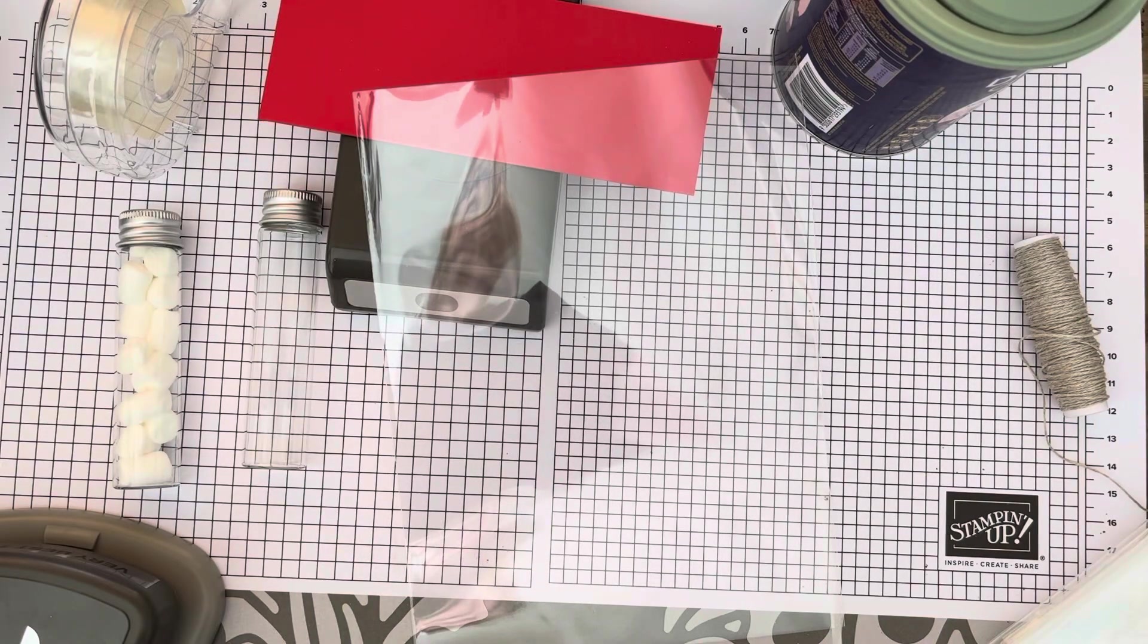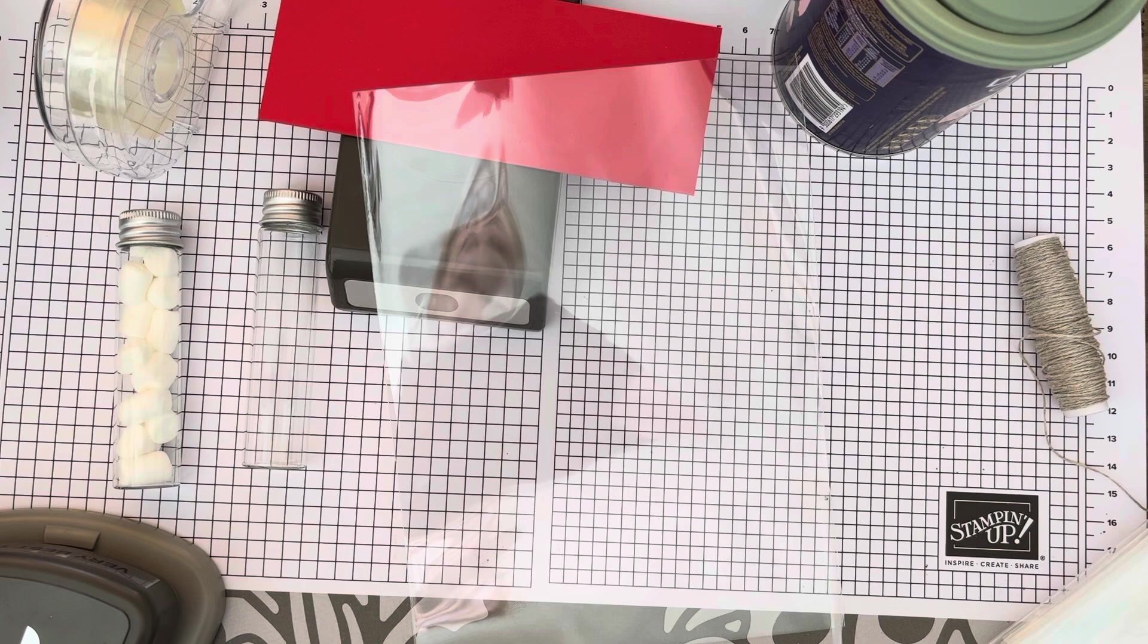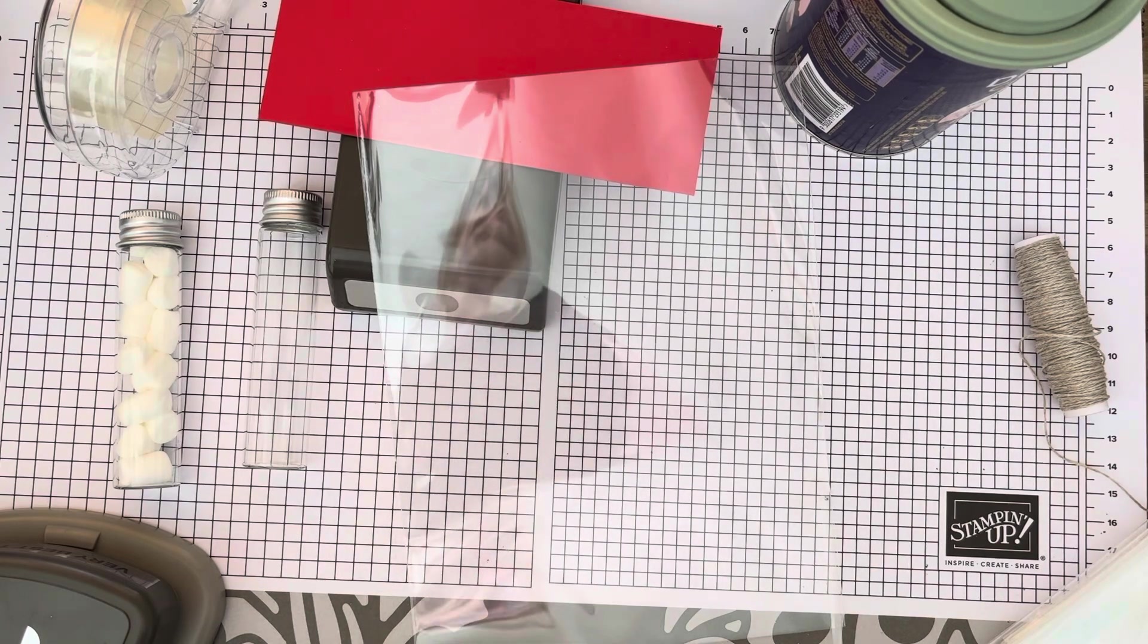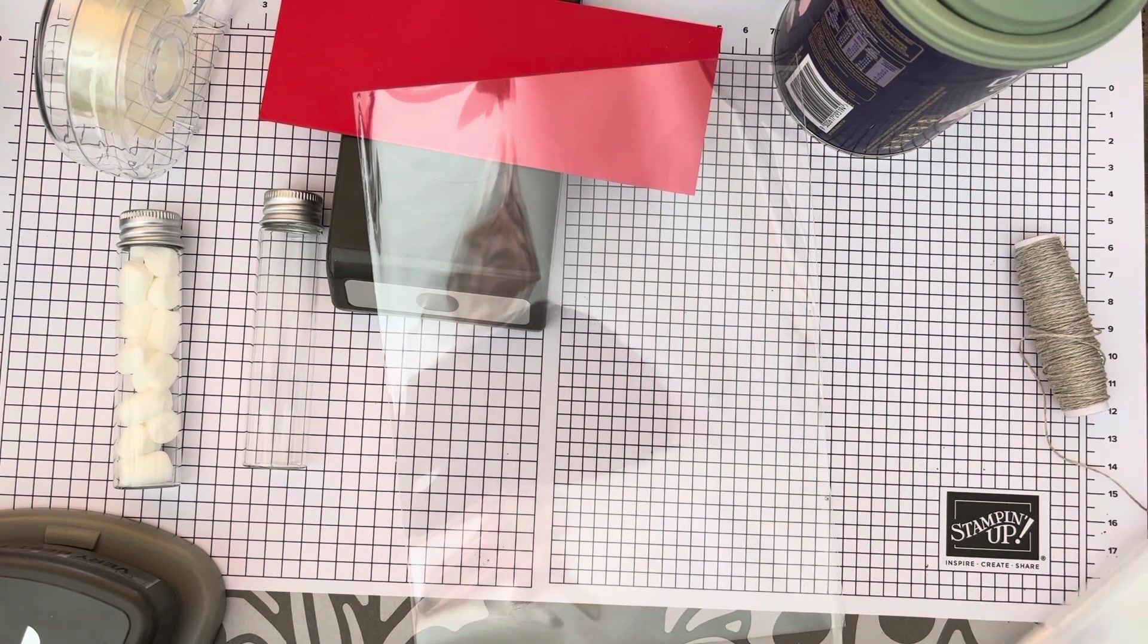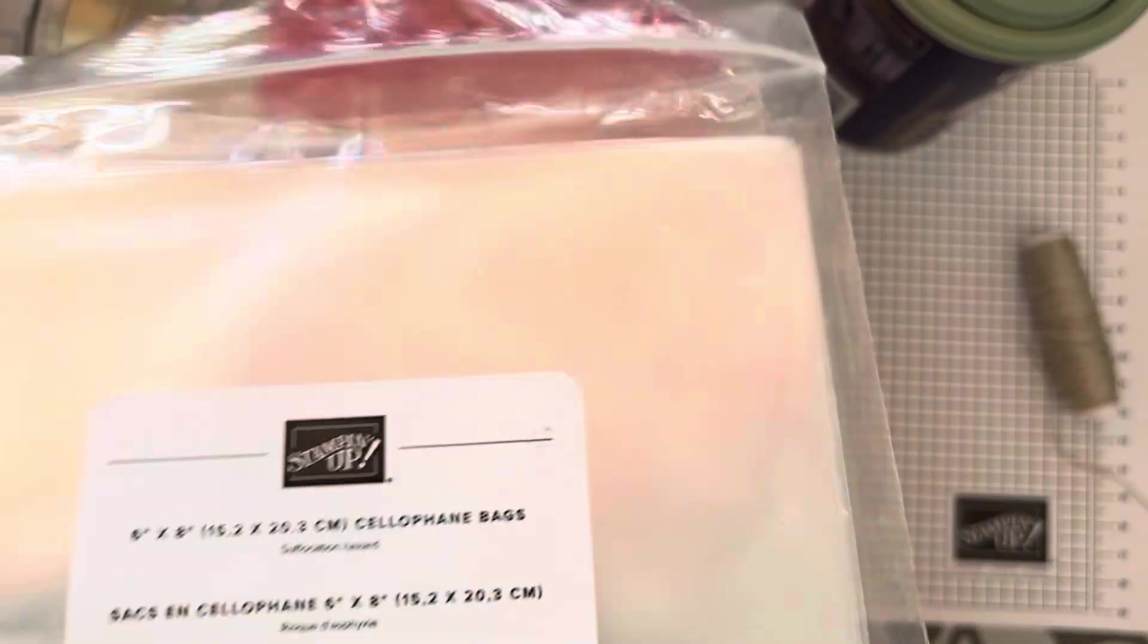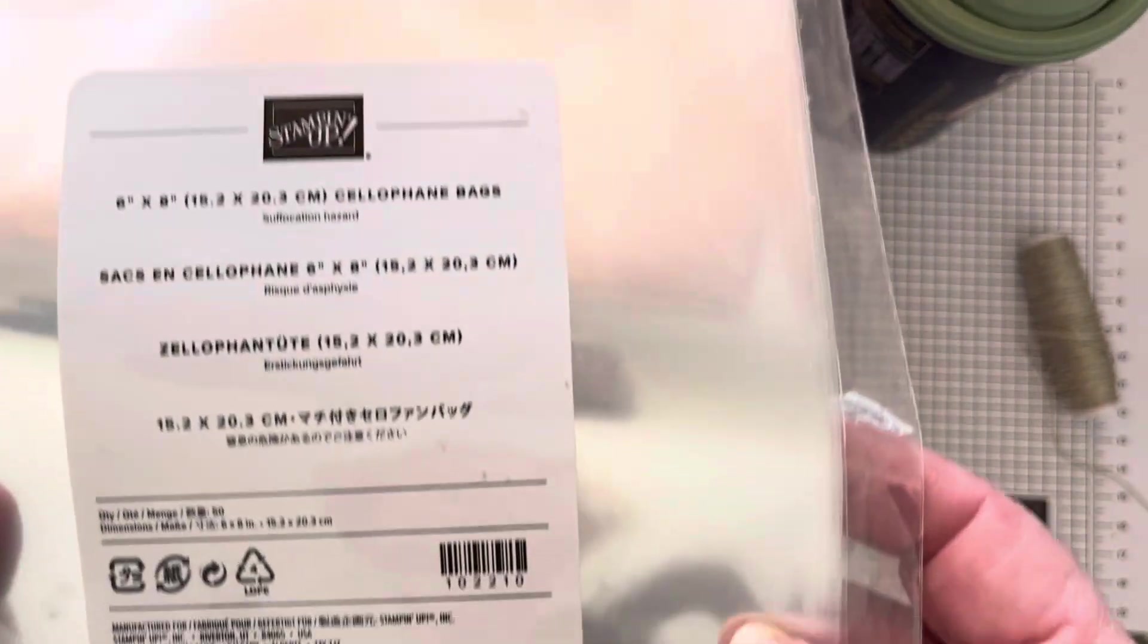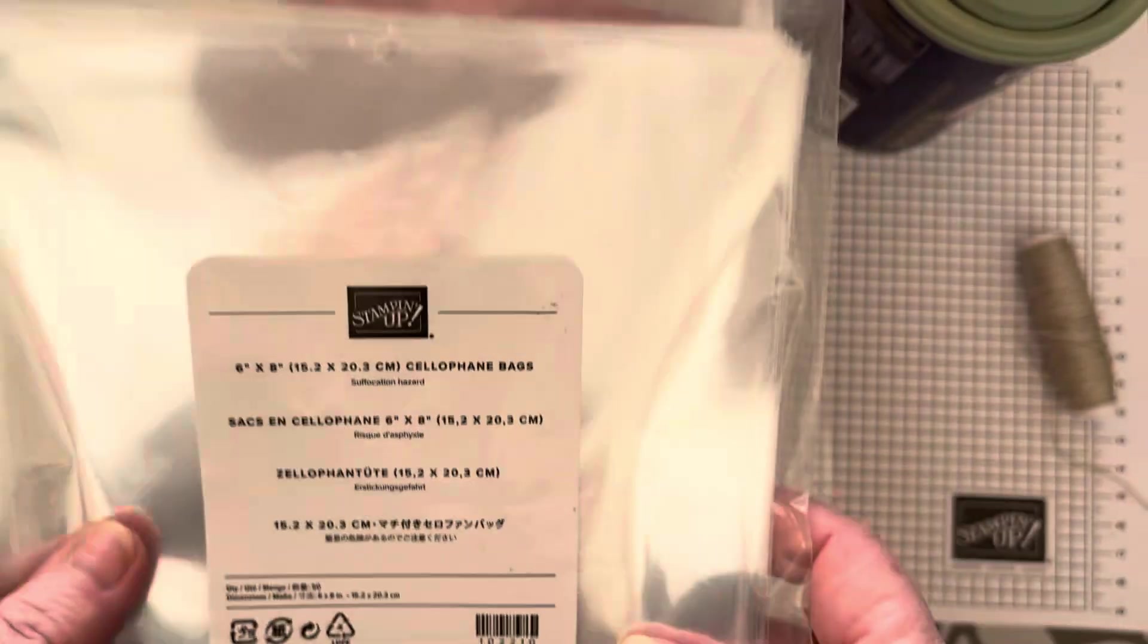Hi, my name's Cheryl Hurst. I'm an independent Stampin' Up demonstrator here in Sydney, Australia. Today I want to make a little gift bag and what you need is the cello bags, and I'll have that all down below.